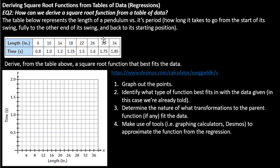This table of data represents the length of a pendulum — think of a grandfather clock with a pendulum that swings back and forth, like a metronome. This is the length of the pendulum versus its period. A period is how long it takes for a pendulum to begin its swing, go all the way to fully extended, and come all the way back. As the length of the pendulum increases, so too does the period of the swing.